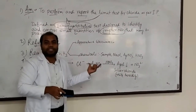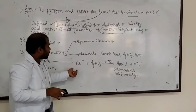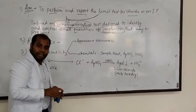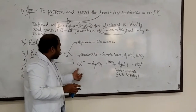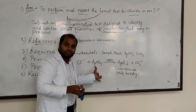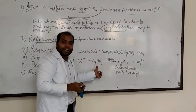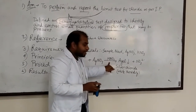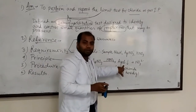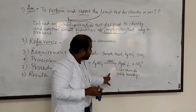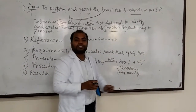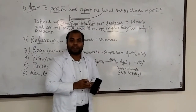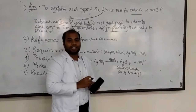This is the principle on which the limit test is based. If chloride ion — which is an anion — is present in any solution, in the presence of silver nitrate and dilute nitric acid as catalyst, it produces silver chloride. Silver chloride is a white insoluble precipitate that appears as turbidity or opalescence in the solution.